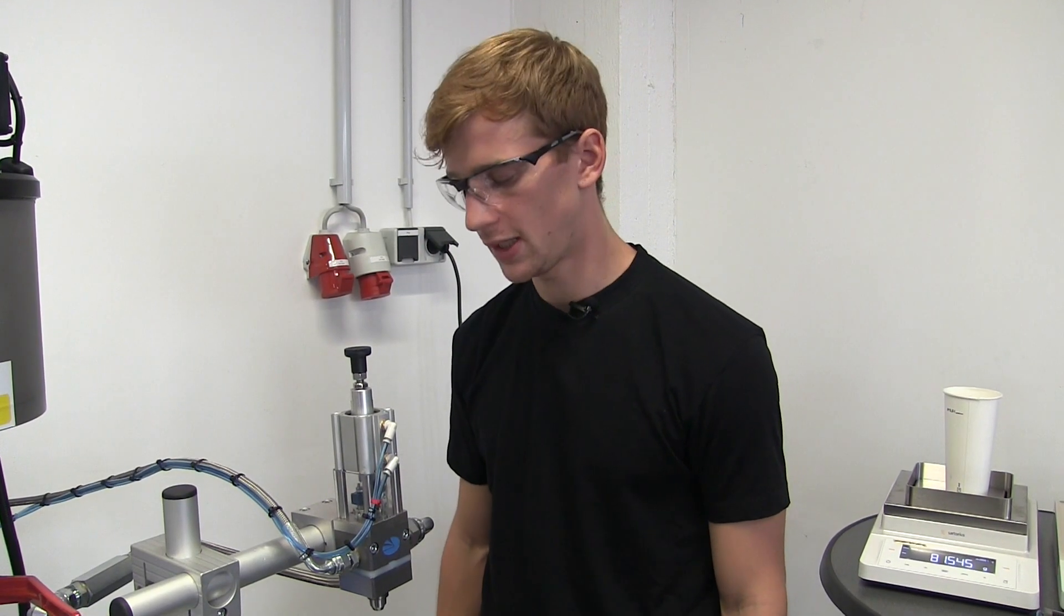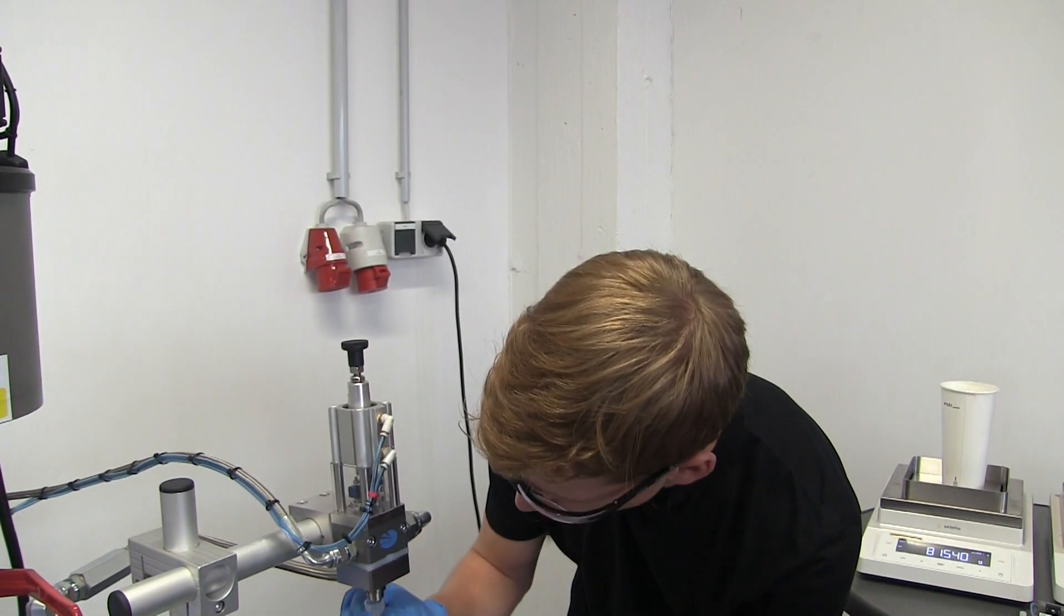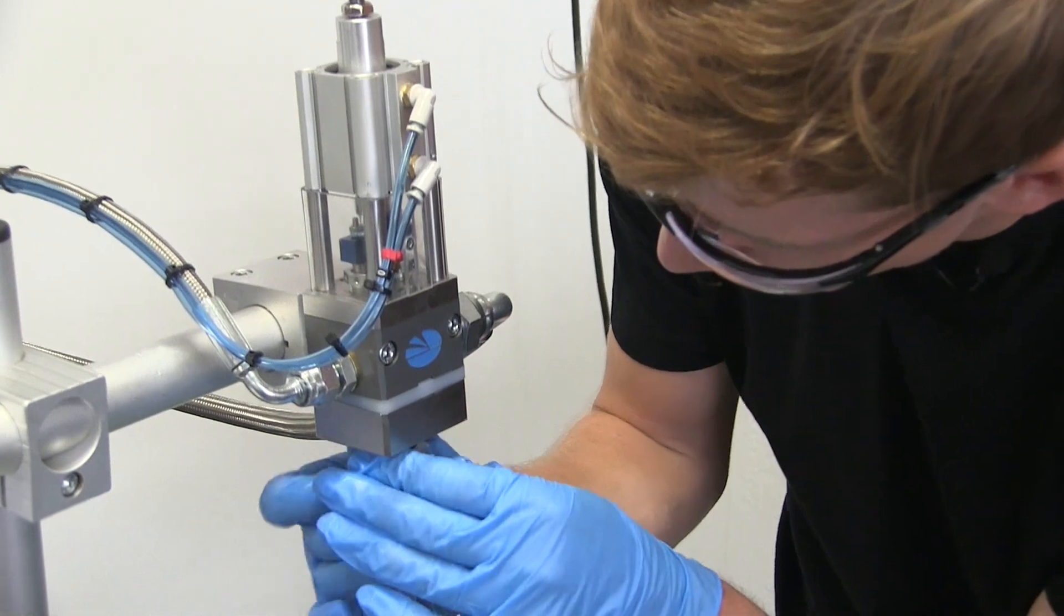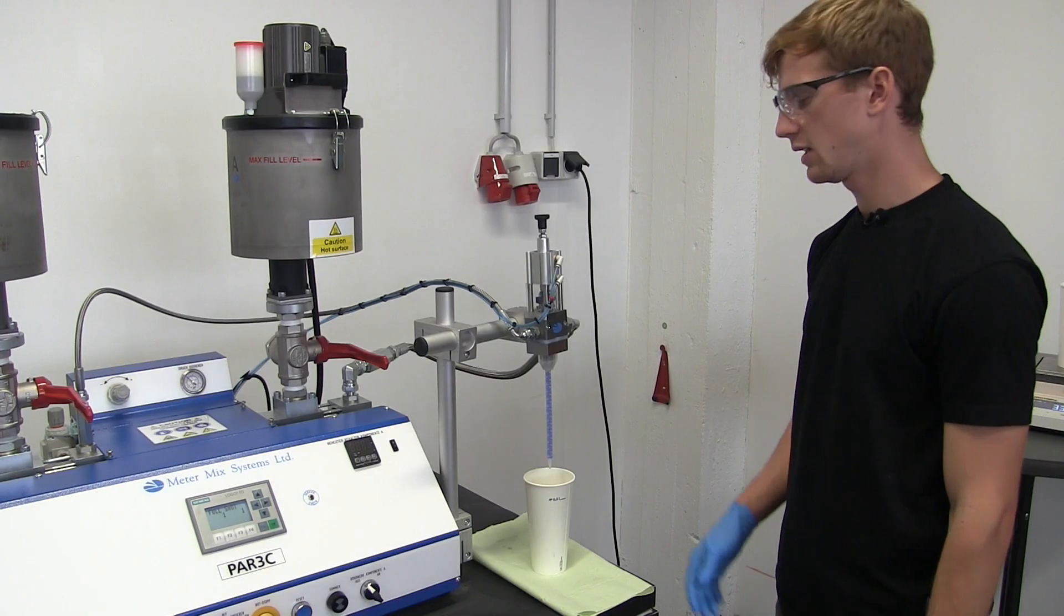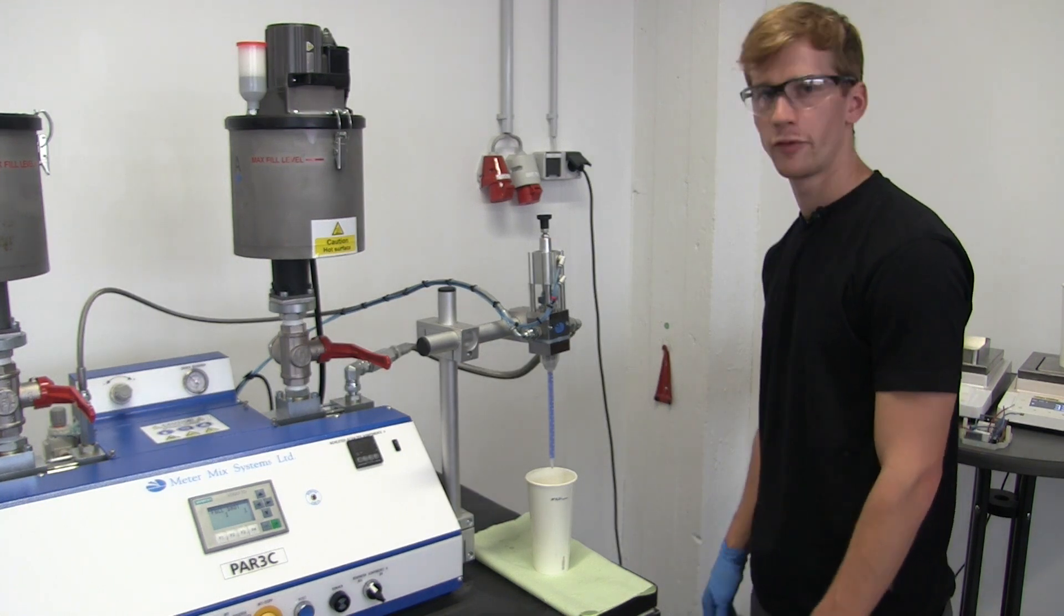Just one more step and our system is ready for metering. To do this, you need to fit the mixer nozzle onto the outlet valve and screw it on. After screwing the mixer nozzle onto the outlet valve, it's time for a trial run.